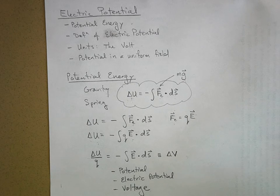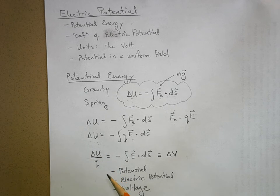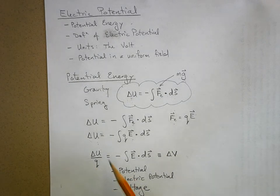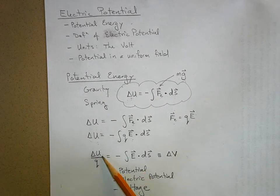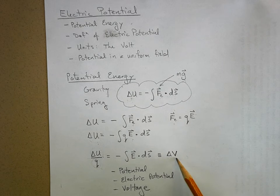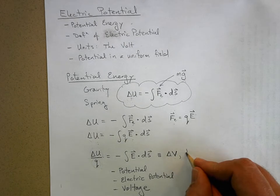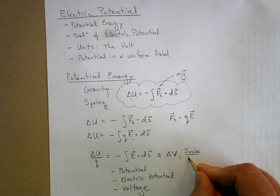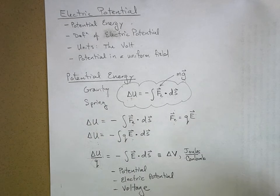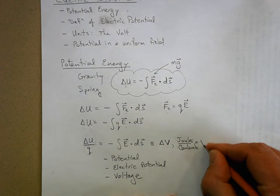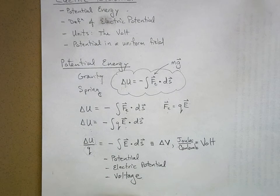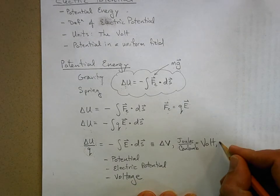Let's talk about units. The units for potential energy are joules, and the units for charge are coulombs. So the change in voltage has units of joules per coulomb. A joule per coulomb by definition is a volt, abbreviated with a capital V.